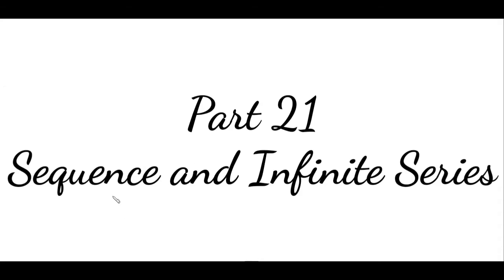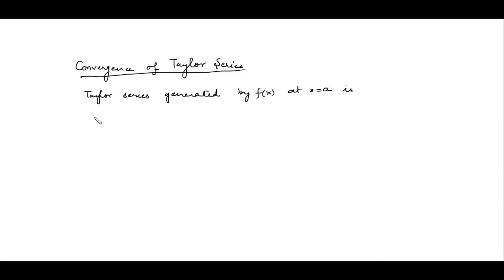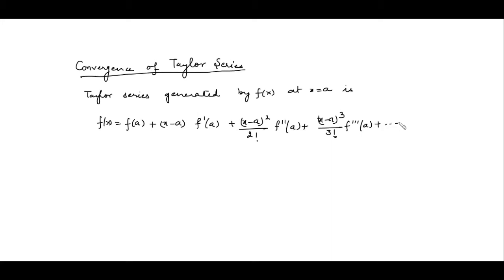Today I am going to explain the next topic: convergence of Taylor series. In the previous video, I explained what the Taylor series about center a means. The Taylor series generated by some function at x equal to a is given by f(x) = f(a) + (x−a)·f'(a) + (x−a)²/2! · f''(a) + (x−a)³/3! · f'''(a) + ... + (x−a)^n/n! · f^(n)(a) + ...